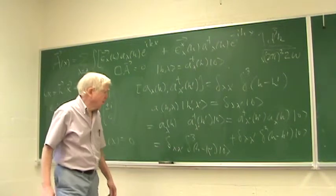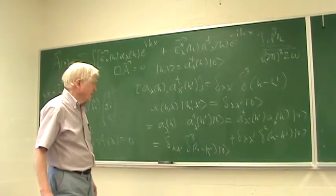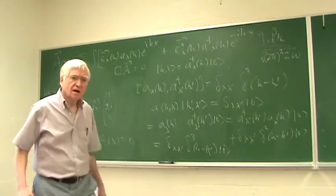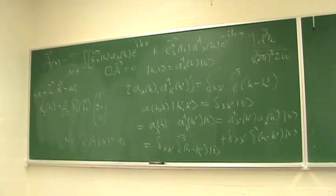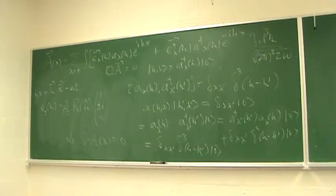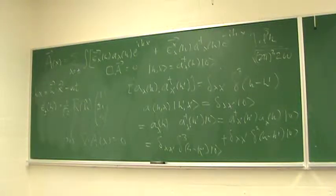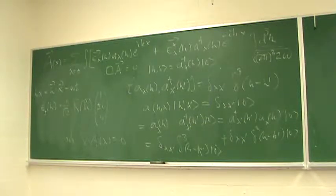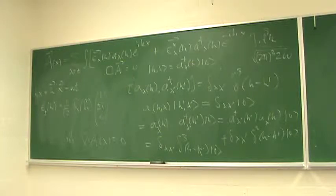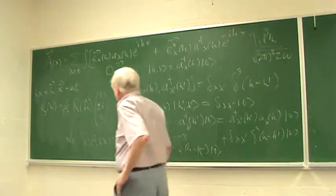So if you act the creation operator on the vacuum, that will make a state of one photon of type lambda k — polarization lambda and wave number k. Then hitting that photon with the annihilation operator with matching lambda and k would destroy that photon. If the variables don't match, you just get zero.